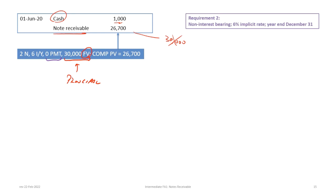In the present value calculation for a non-interest-bearing note using a financial calculator: N=2, IY=6, PMT=0, FV=30,000. Computing the present value gives $26,700, and that's the amount at which the note is recorded. The land sales is the sum of cash plus the note receivable — so instead of $31,000, land sales are now $27,700. The cost of goods and lot inventory part of the journal entry remains the same.